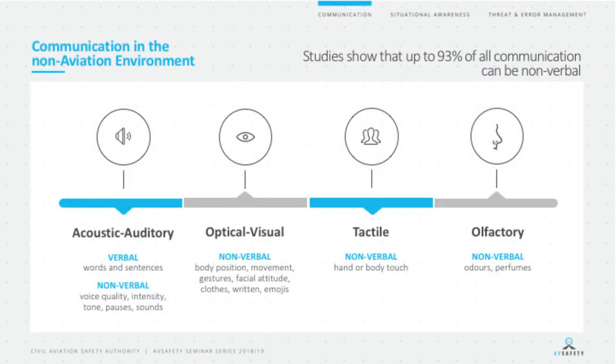This raises the question of how we as human beings communicate in the non-aviation environment. Studies at universities worldwide show the vast majority of human communication occurs in the non-verbal space rather than the verbal space. In fact, some studies show up to 93% of our communication as humans occurs in a non-verbal way — through acoustic tone and expression, optical or visual means like body language, and other channels.